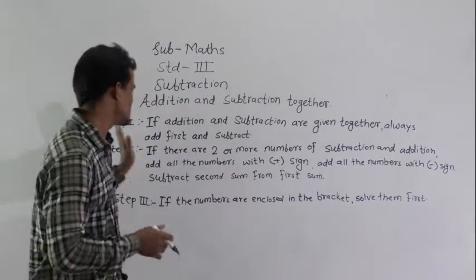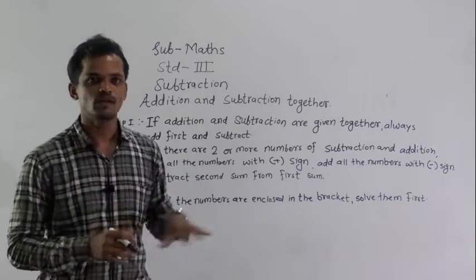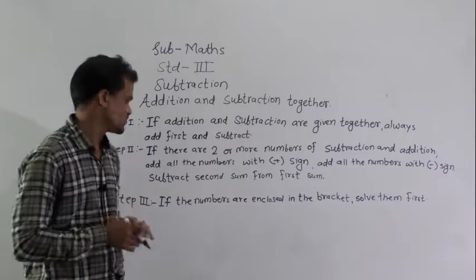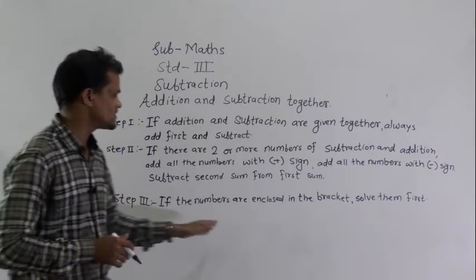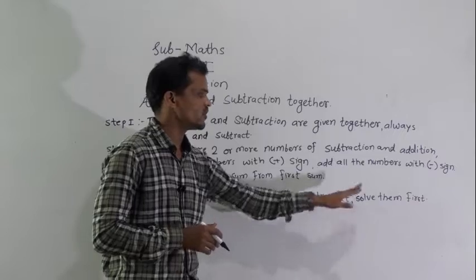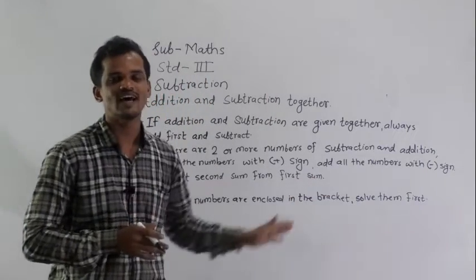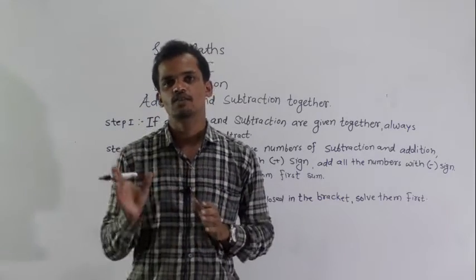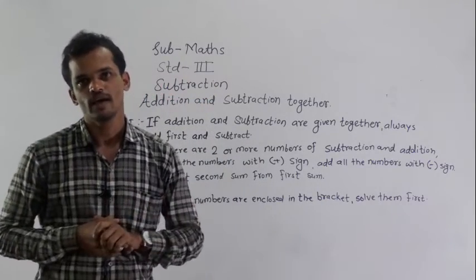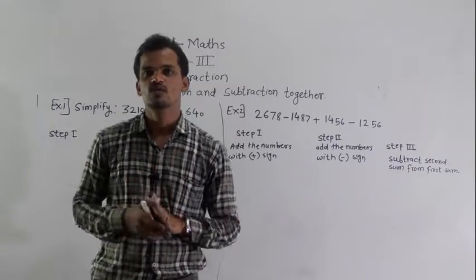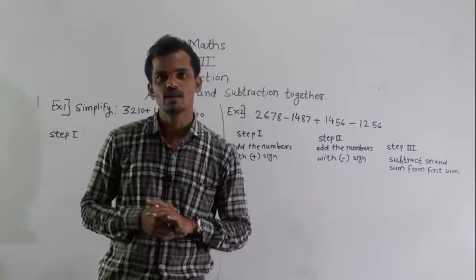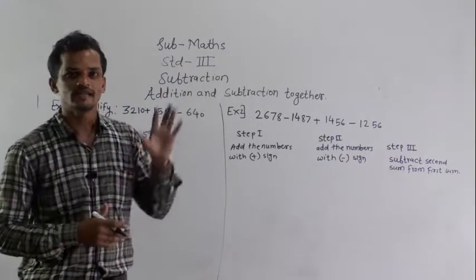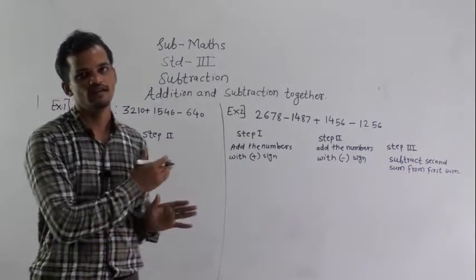This is step 2. Afterward we will solve the example so you will understand how to follow these steps. Then step 3: if the numbers are enclosed in brackets, solve them first. So these are 3 rules we have to follow to solve addition and subtraction together. Now we will solve some examples of addition and subtraction together.